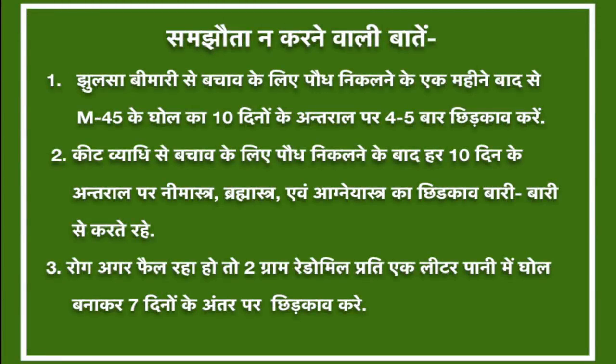समझौता न करने वाली बातें: जुलसा बीमारी से बचाव के लिए पौध निकलने के एक महीने बाद से ही M45 के घोल का 10 दिनों के अंतराल पर 4-5 बार छिड़काव करें। कीट-व्याधि से बचाव के लिए पौध निकलने के बाद हर 10 दिन के अंतराल पर निमास्त्र, ब्रह्मास्त्र और अग्न्यास्त्र का छिड़काव बारी-बारी से करते रहें। रोग अगर फैल रहा हो, तो 2 ग्राम रेडो मिल प्रति 1 लीटर पानी में घोल बनाकर 7 दिनों के अंतर पर छिड़काव करें।